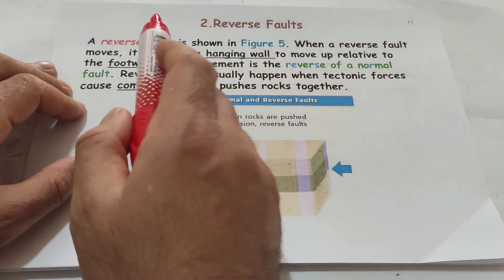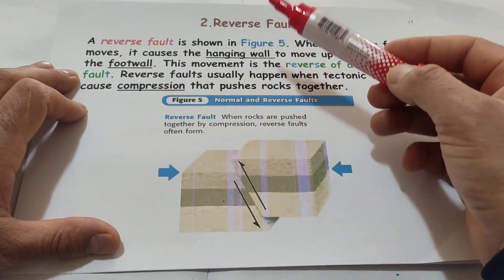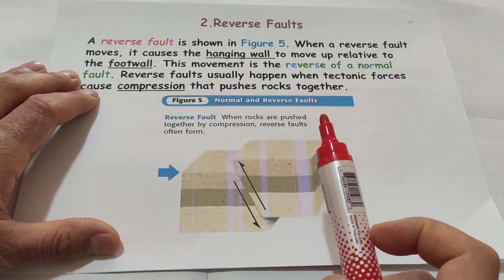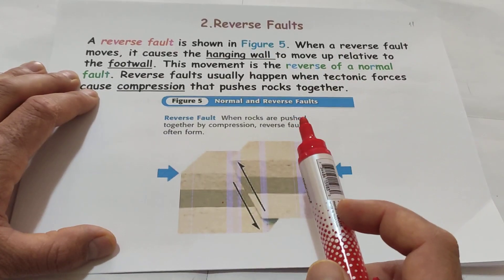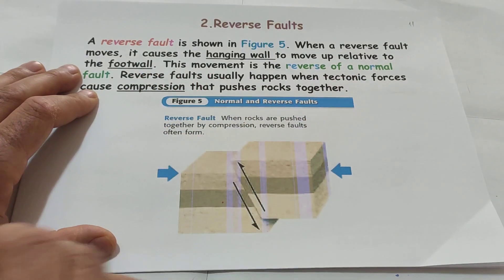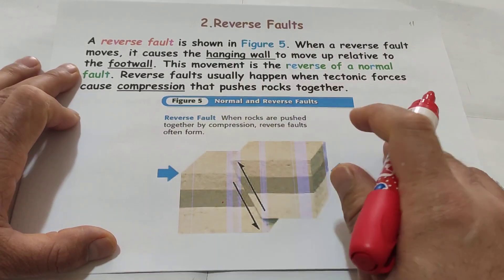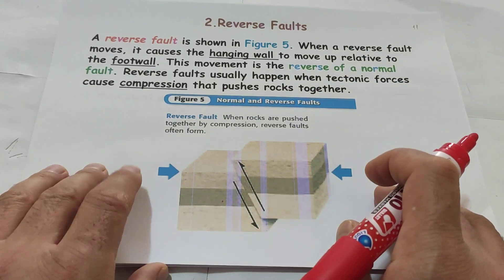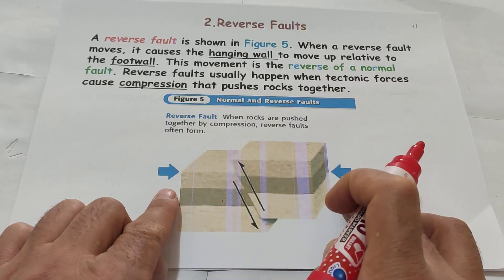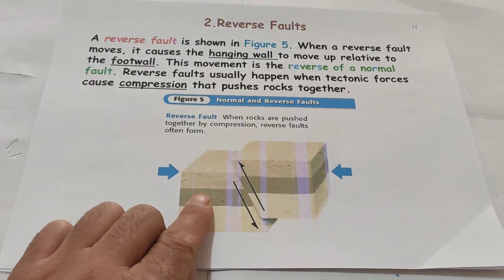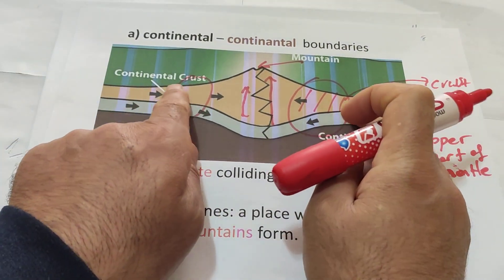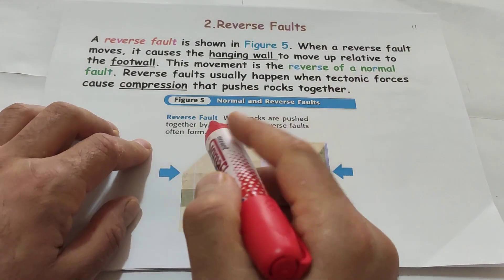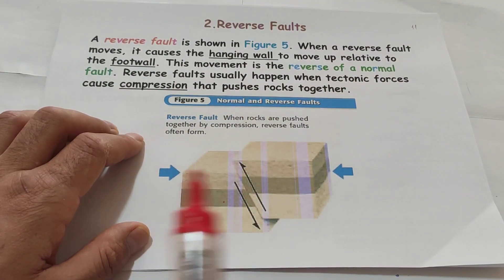The second kind of fault, students, is the reverse fault, shown in figure 5. When a reverse fault moves, it causes the hanging wall to move up in relationship to the foot wall — the movement is the reverse of a normal fault. Reverse faults usually happen when tectonic forces cause compression that pushes rocks together. Remember the normal fault — it goes to different sides like a divergent boundary. But in a reverse fault, it is the opposite: the rock layers push each other. When they push each other, a mountain forms. When rocks are pushed together by compression, reverse faults often form.